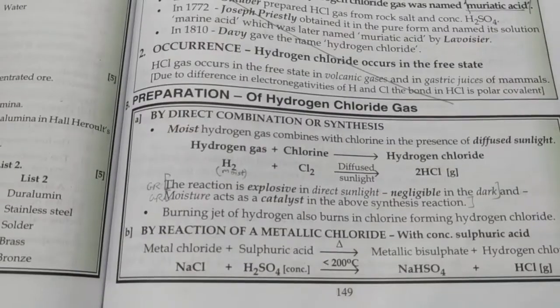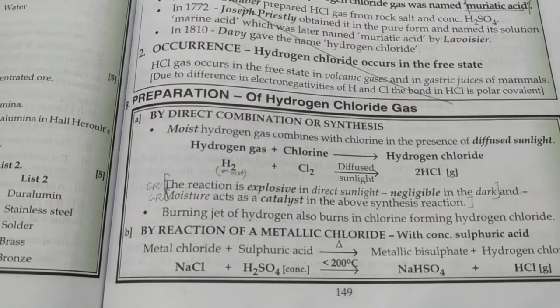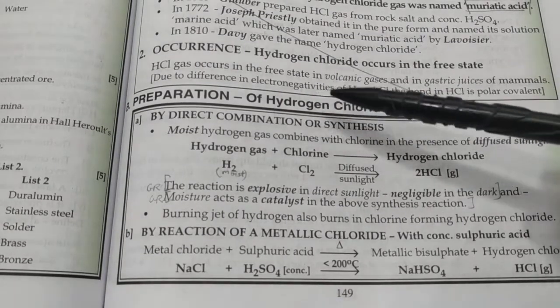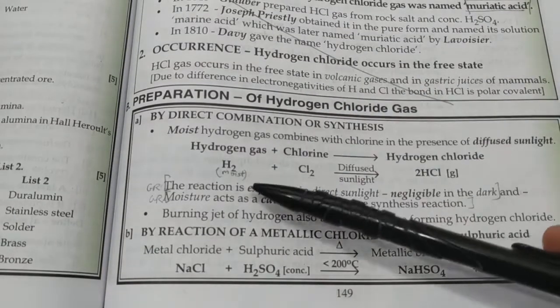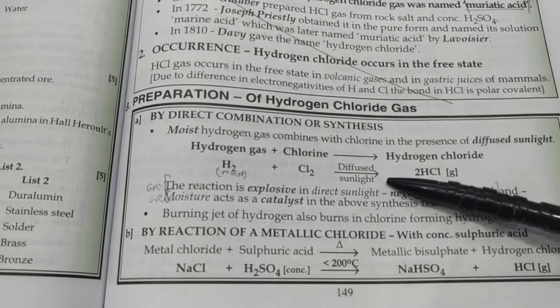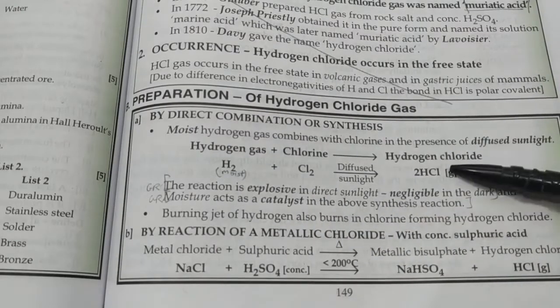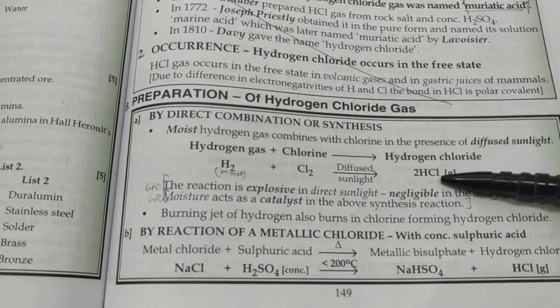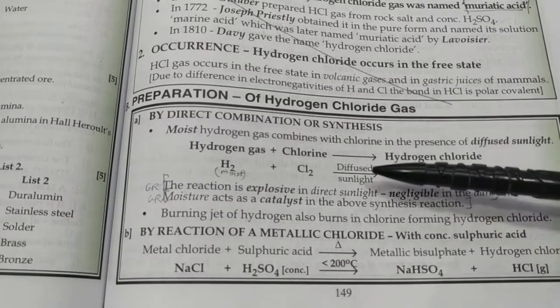Let's study 10 standard ICSE chemistry chapter 7: hydrogen chloride. Hydrogen chloride gas is an acidic gas; its formula is HCl. It can be prepared in various ways. One method is direct combination or synthesis — we use moist hydrogen gas and react it with chlorine in the presence of diffused sunlight to give hydrogen chloride gas. This is in the gaseous state only; when dissolved in water we call it hydrochloric acid.